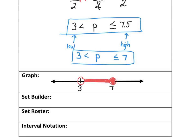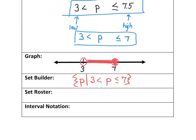This shows all numbers between 3 and 7, but not including 3. I copy the same set builder with the French brace around it. For the roster, 3 is not included, so I start at 4, then 5, 6, and 7 — all included. For the interval notation, I start with the low number 3 and the high number 7. The 3 is not included, so I put a parenthesis on the left. Since 7 is included, I put a bracket on the right. So the interval notation is (3, 7].